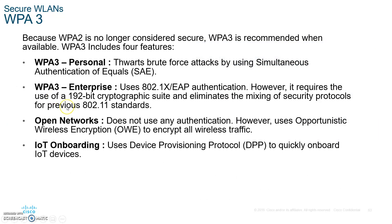WPA3 comes in personal and enterprise versions. WPA3 Enterprise requires a 192-bit cryptographic suite that eliminates the mixing of security protocols from previous 802.11 standards. Open networks with WPA3 use Opportunistic Wireless Encryption (OWE) to encrypt all wireless traffic even without authentication. WPA3 also supports IoT onboarding, using the Device Provisioning Protocol to quickly onboard IoT devices.